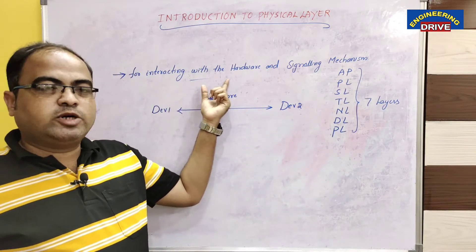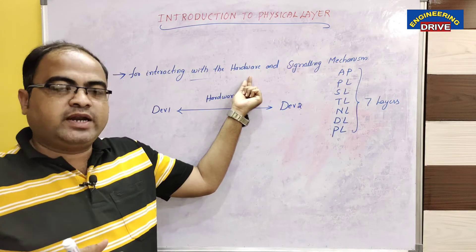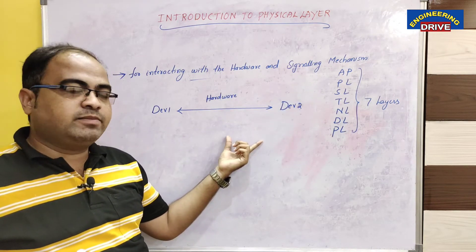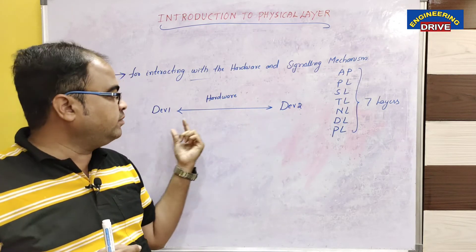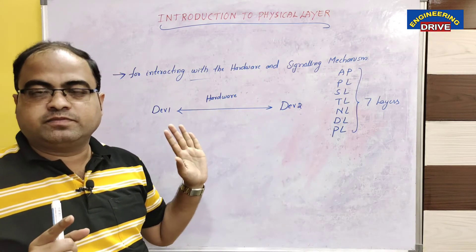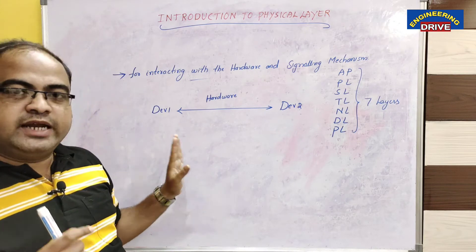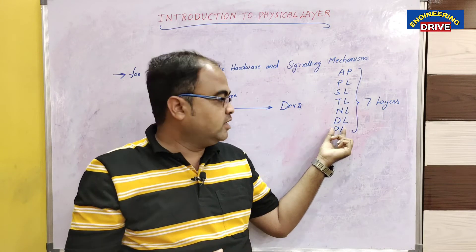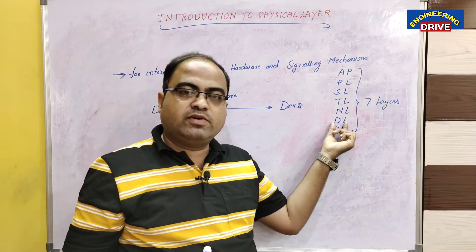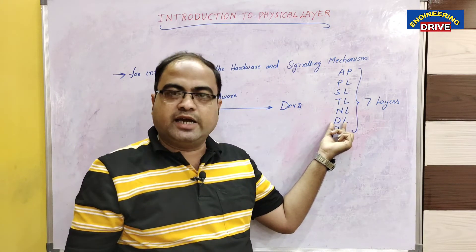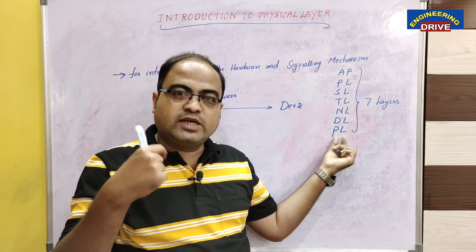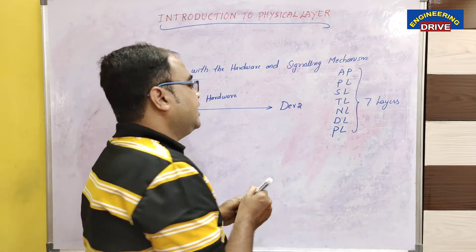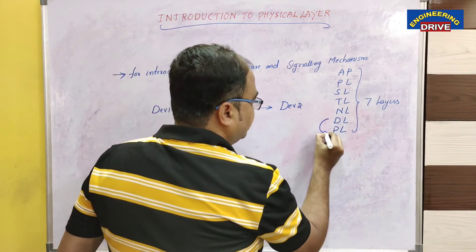Physical layer is not only responsible for interacting with the hardware but also for the signaling mechanism. These devices will use the signaling mechanism in order to communicate with each other. Physical layer will provide services to the next higher layer, which is the data link layer. Data link layer will give the frames to the physical layer.